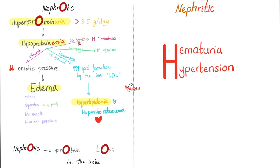Nephrotic syndrome has four main features: hyperproteinuria, hypoproteinemia, edema, and hyperlipidemia. High protein in the urine, low protein in the blood, edema, and hyperlipidemia.